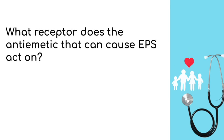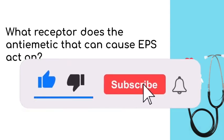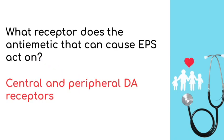What receptor does the anti-emetic that can cause extrapyramidal symptoms act on? Another hint is that this anti-emetic can also be used to treat diabetic gastroparesis. Those receptors are central and peripheral dopamine receptors. The anti-emetic is metoclopramide, which is commonly indicated for anti-emetics or gastroparesis and has the side effect of causing extrapyramidal side effects.